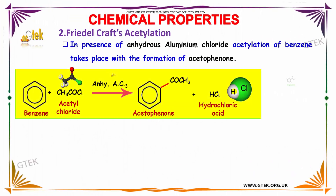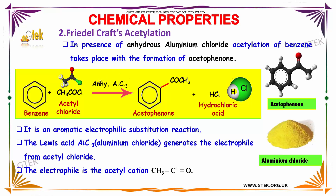In the presence of anhydrous AlCl3, acetylation of benzene with CH3COCl (acetyl chloride) produces acetophenone along with hydrochloric acid. This is an aromatic electrophilic substitution reaction. The Lewis acid AlCl3 generates the electrophile — the acetyl cation CH3C⁺=O — from acetyl chloride.